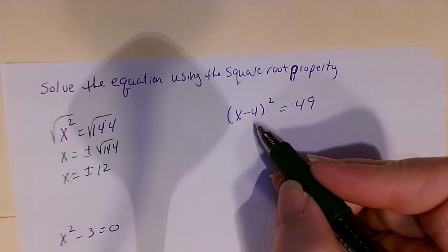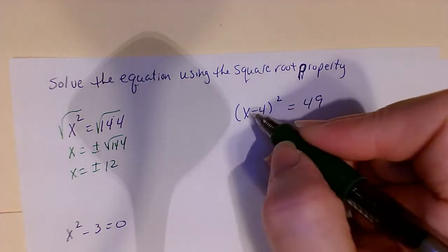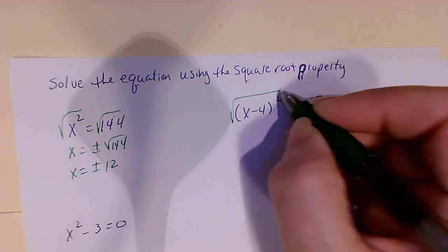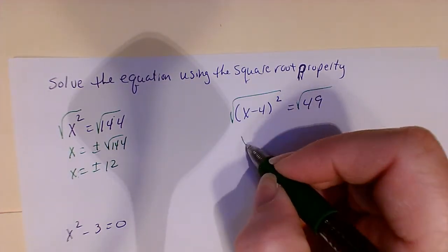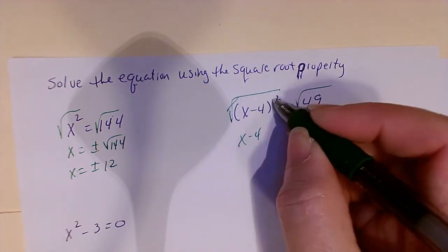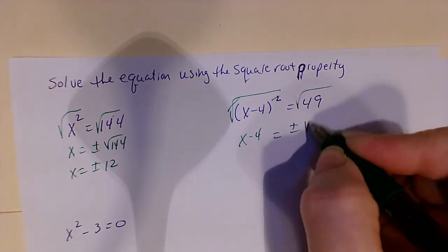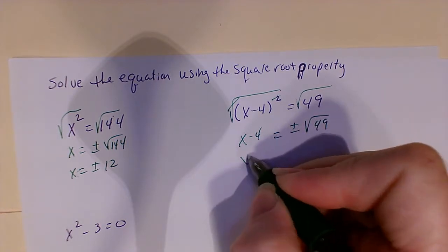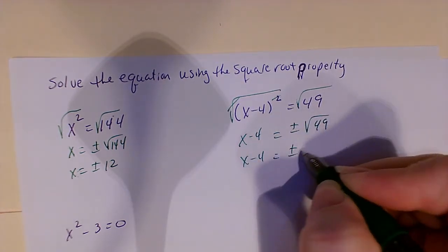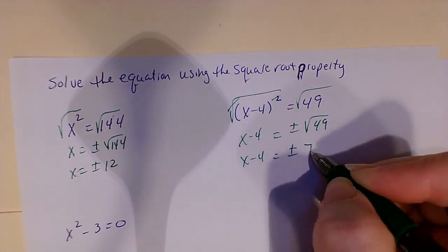When we're looking at a problem like this, we're going to do the same thing. We have square root of each side, so we get x minus 4 because the square root will take care of the squaring. Plus or minus the square root of 49. So x minus 4 equals plus or minus the square root of 49 is 7.